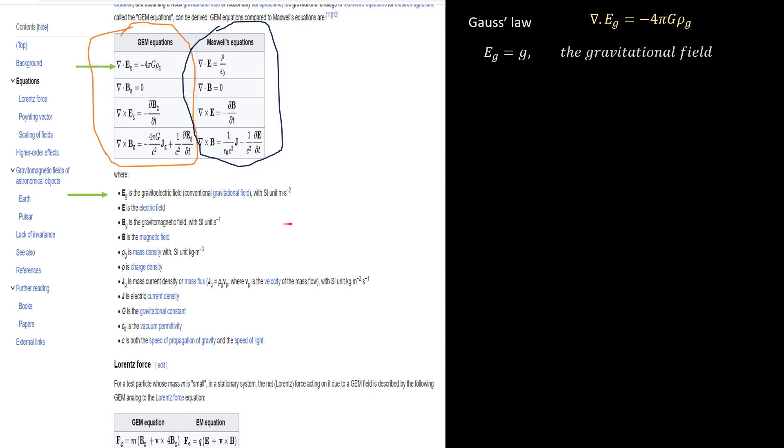Apparently, B subscript G is the gravitomagnetic component of the apparent field. The next symbol is rho G. Rho subscript G represents the mass density of the space considered. Next, we have J sub G. This is the mass current density of the space considered.